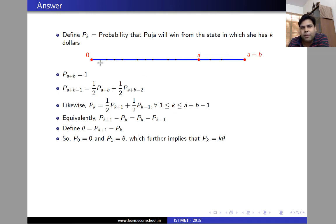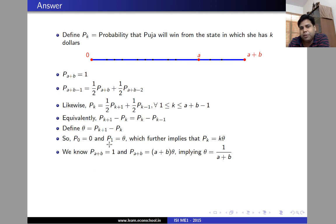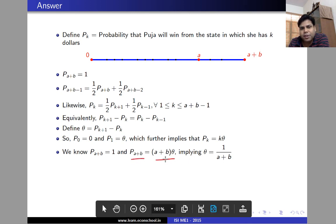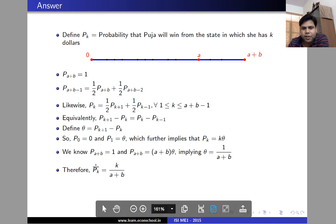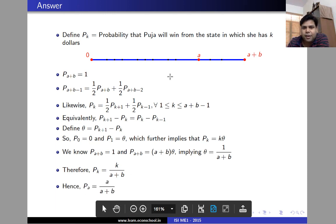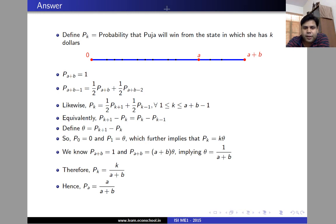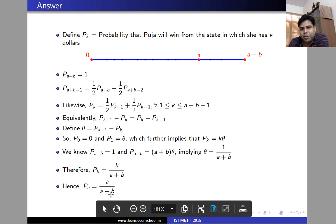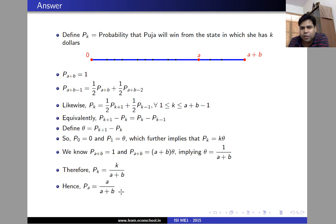So P_K equals K times theta for all K between one and A plus B. We also know P(A+B) equals one, and by the formula P(A+B) equals (A+B) times theta, so theta equals one over (A+B). Therefore starting from state K, the probability that Pooja wins all of Priya's money is K divided by (A+B). Since K equals A, this probability is A over (A+B). Because A is greater than B, this is greater than one-half, which makes sense since she started with more money than Priya.